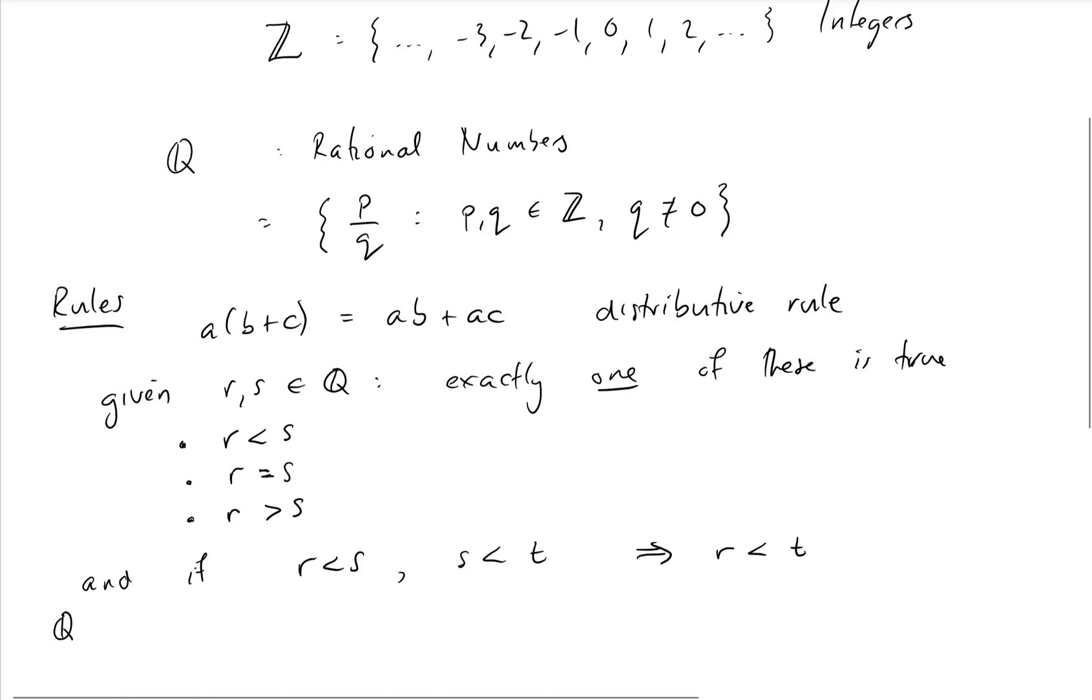So we call, if you like technical language, Q is an ordered field. So those are our rational numbers, and maybe we can develop calculus just using these numbers, because we seem to be able to get as accurate as we like, and sort of go as close as we like to any point on a number line with these rational numbers. So maybe they are a suitable choice for our calculus.